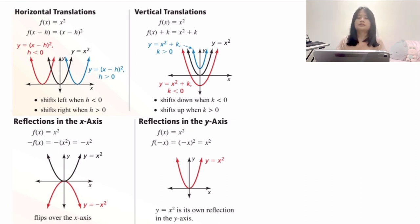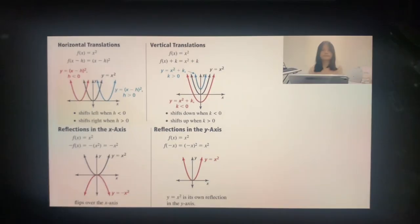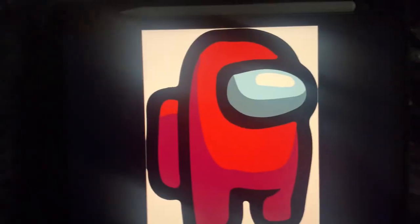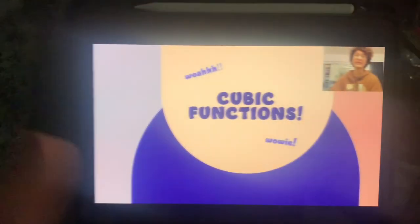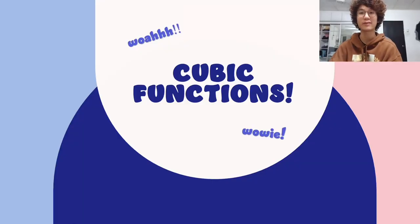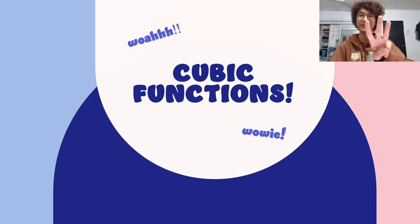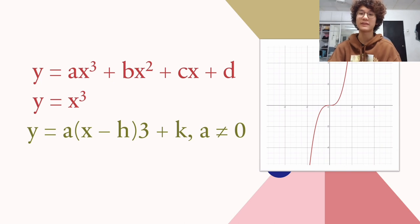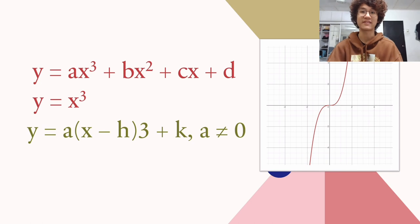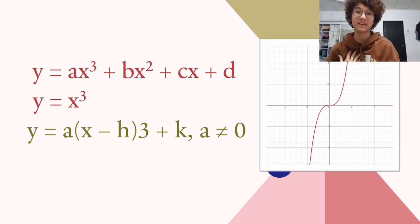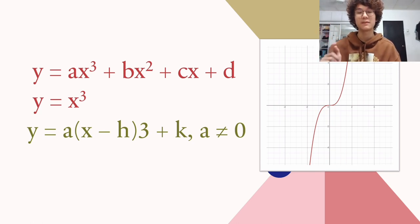Let's move on to cubic functions. A cubic function is a polynomial of degree 3, most commonly written as y equals ax³+bx²+cx+d, or simply y=x³. For our purposes, it will most commonly be written as y equals a(x-h)³+k.